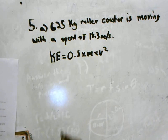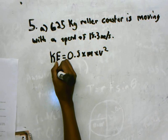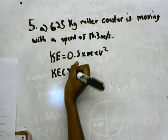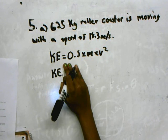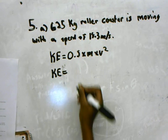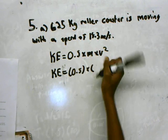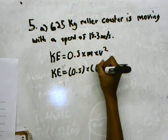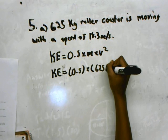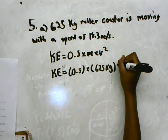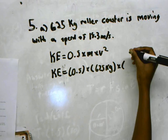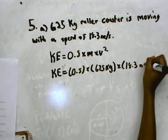Kinetic energy. So then you just have to plug it in. So you'd have 0.5 times your 625 kg times your 18.3 meters per second squared.